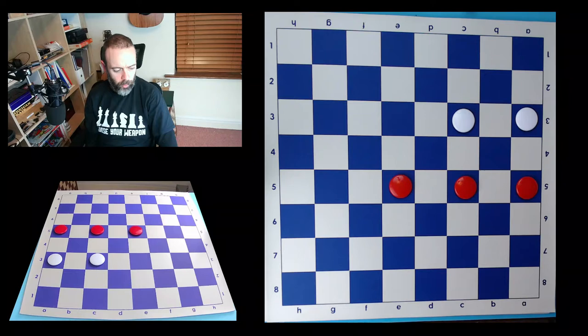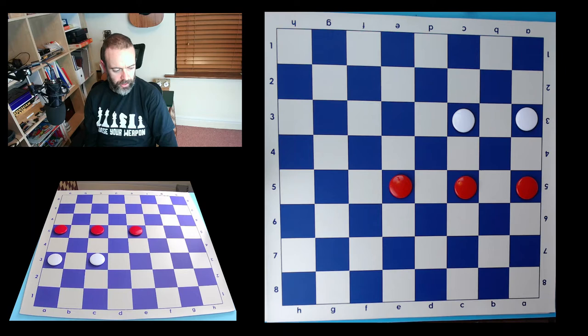So now, how do we win a drafts game? Both players start with 12 identical pieces at the start, so how do we actually get an advantage and win?